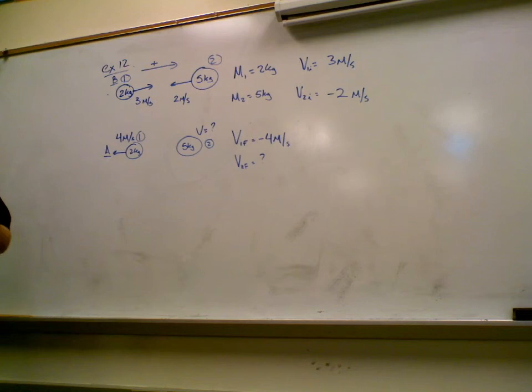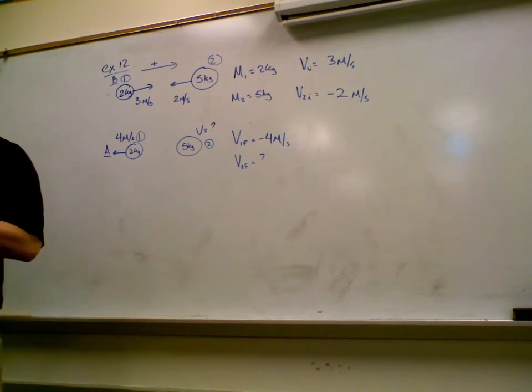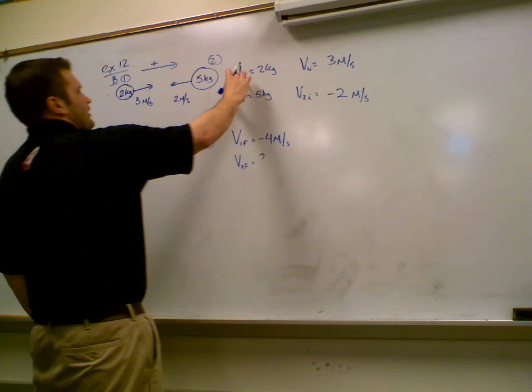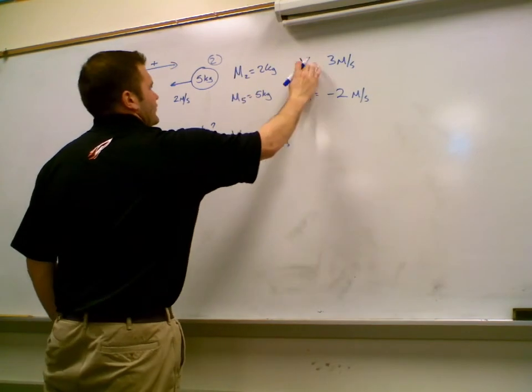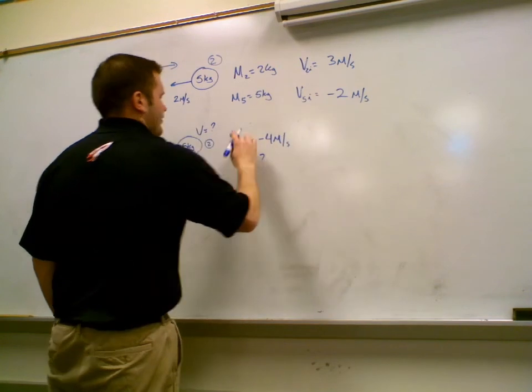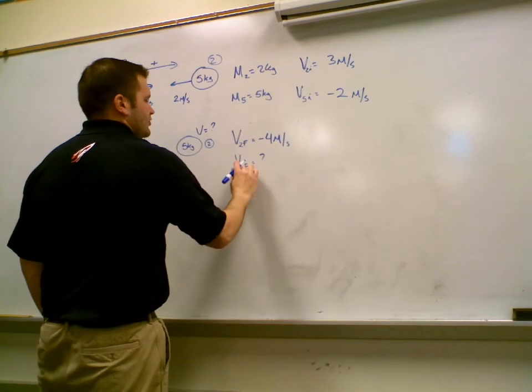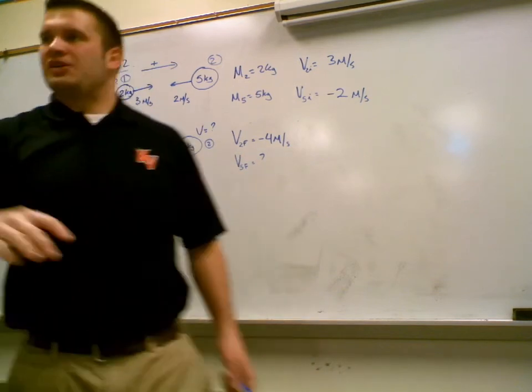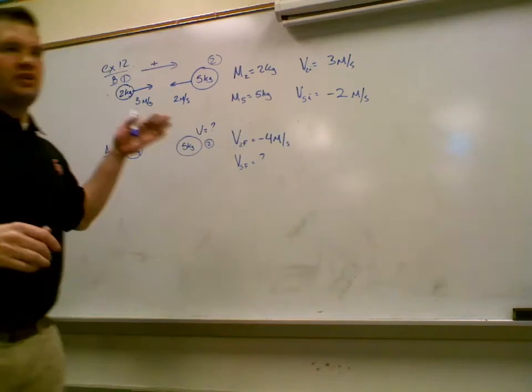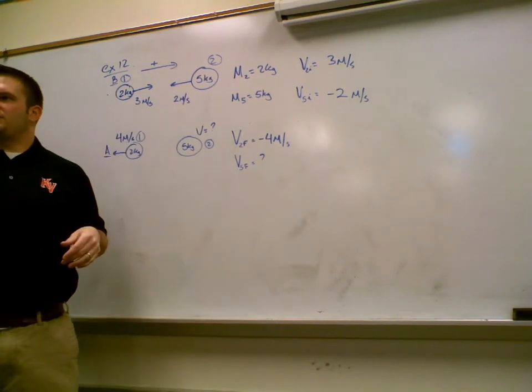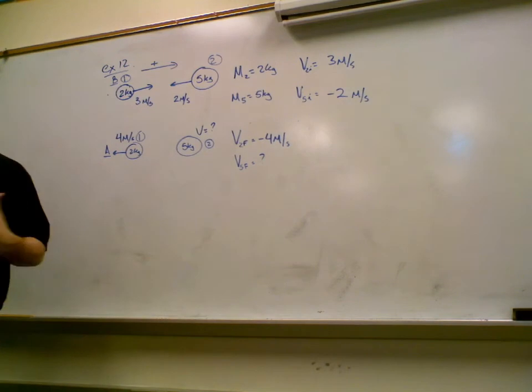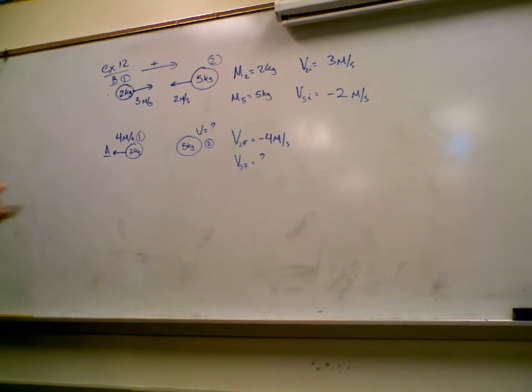Now, if you're doing this problem and you want to make it a little simpler, if you don't want the subscripts to be so confusing, you can also write it like this: 2, 5, 2, 5, 2, 5. So instead of having the subscripts be 1 and 2, I switch to their masses. Does that make sense? And that way it makes it a little easier so I don't get this confused.